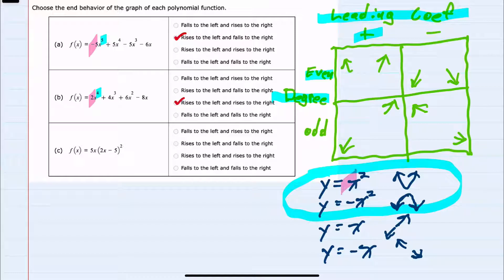For the last one here, c, I need to find the leading term. But since this isn't written in descending order of terms, I would need to first multiply this out.